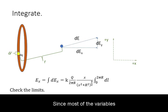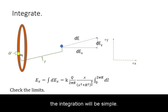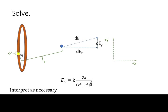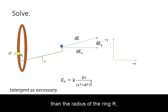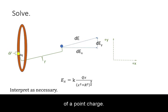Since most of the variables are constant, the integration is straightforward. Finally, we obtain our expression. If we interpret this expression in limiting cases, it simplifies to the electric field of a point charge.